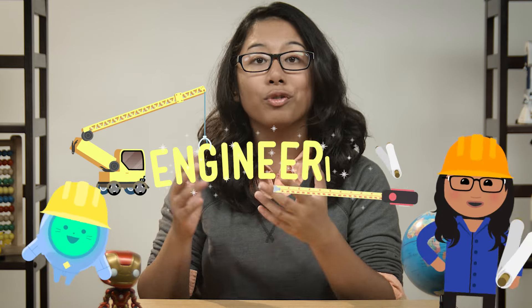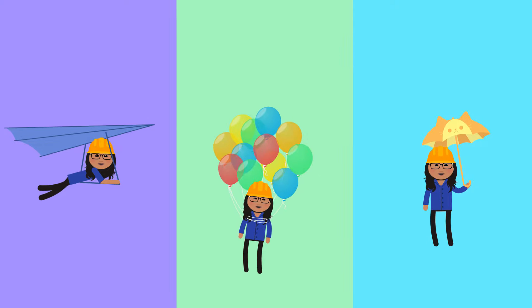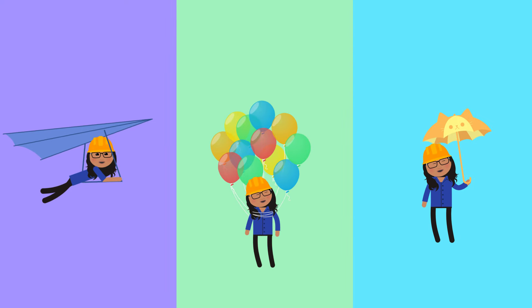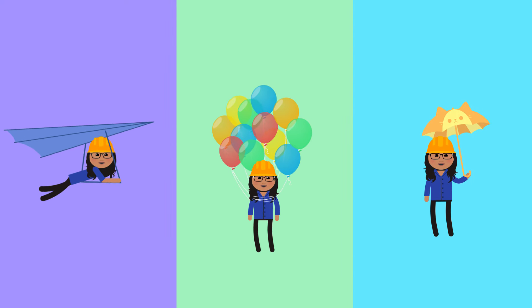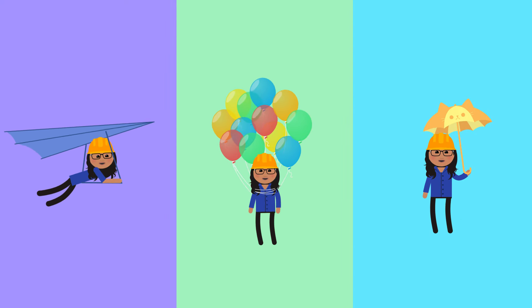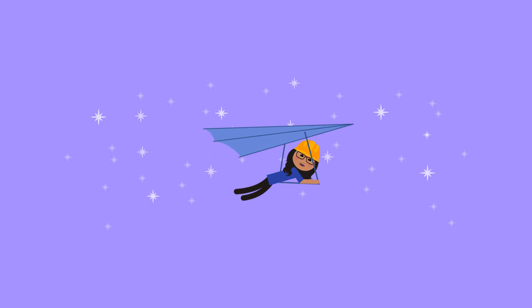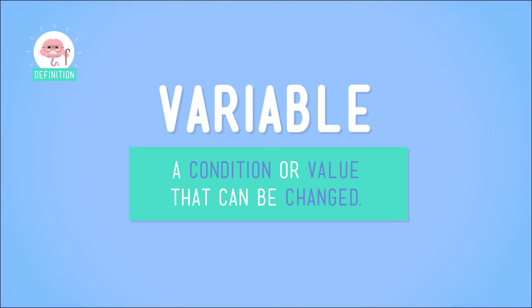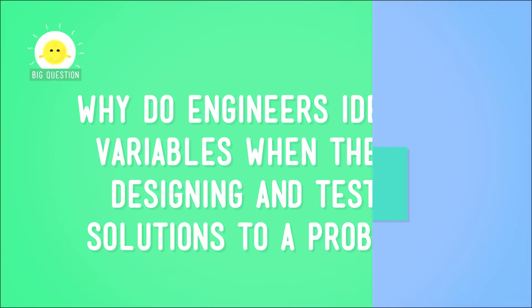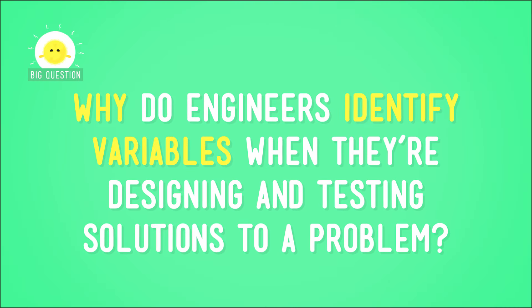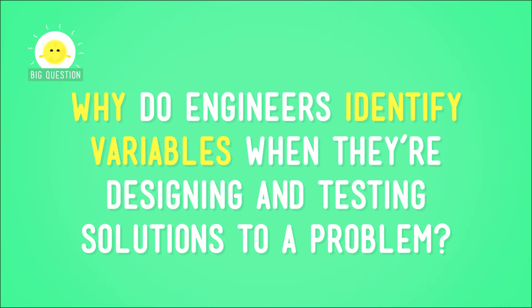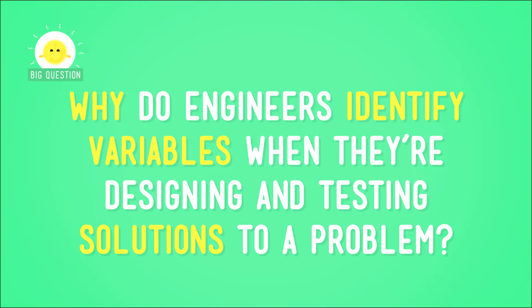The same thing is true for engineering. Last time we were thinking about the moves we could make that would guarantee the solution to our getting across the gorge problem was a success. And that included identifying variables — the conditions or values involved in the problem that can be changed. But what's the big deal? Why do engineers identify variables when they're designing and testing solutions to a problem?